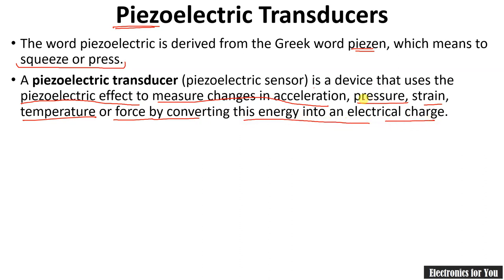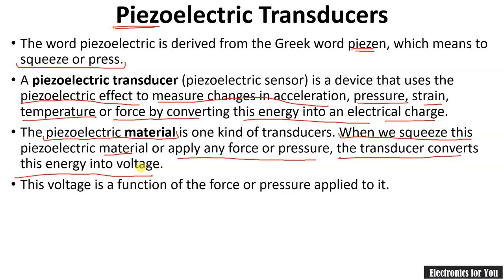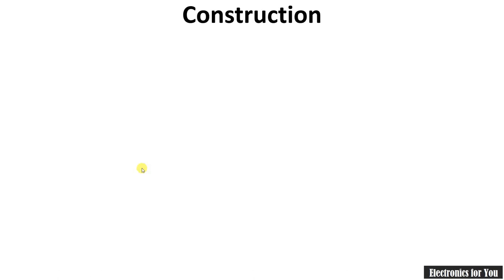Overall, we can say that a piezoelectric transducer can be used for the measurement of acceleration, pressure, strain, temperature or force, and it converts them into an electrical signal. It is an active transducer and it generates this electrical signal by itself. Piezoelectric materials are used for the piezoelectric principle. When we squeeze this piezoelectric material or apply any force or pressure, it converts them into electrical voltage.